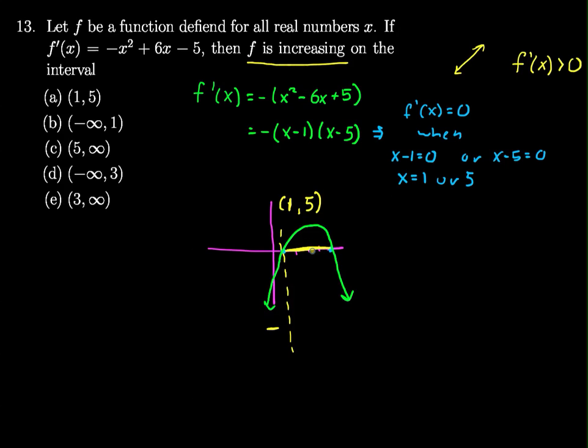If I put in some number in here, let's just say 3, 3 - 1 is 2, 3 - 5 is -2, I get a -4 times a negative, which means I have to have a positive sign in here.